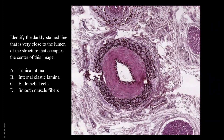Identify the darkly stained line that is very close to the lumen of the structure that occupies the center of this image. We are required to identify this. Are they endothelial cells? Endothelial cells are located here, but they don't produce the dark line. This dark line is because of the presence of fibers. So it's not endothelial cells.